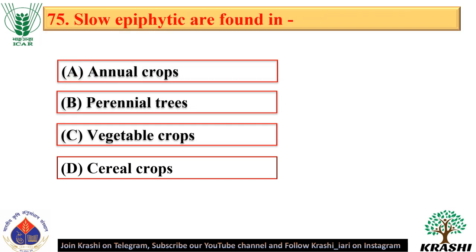Question number 75. Slow epiphytotics are found in perennial trees.